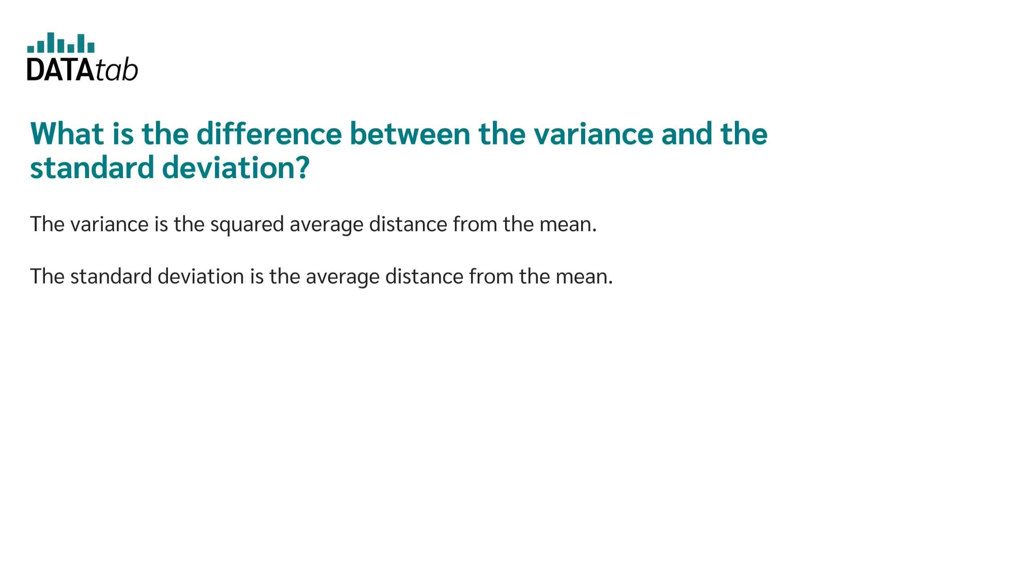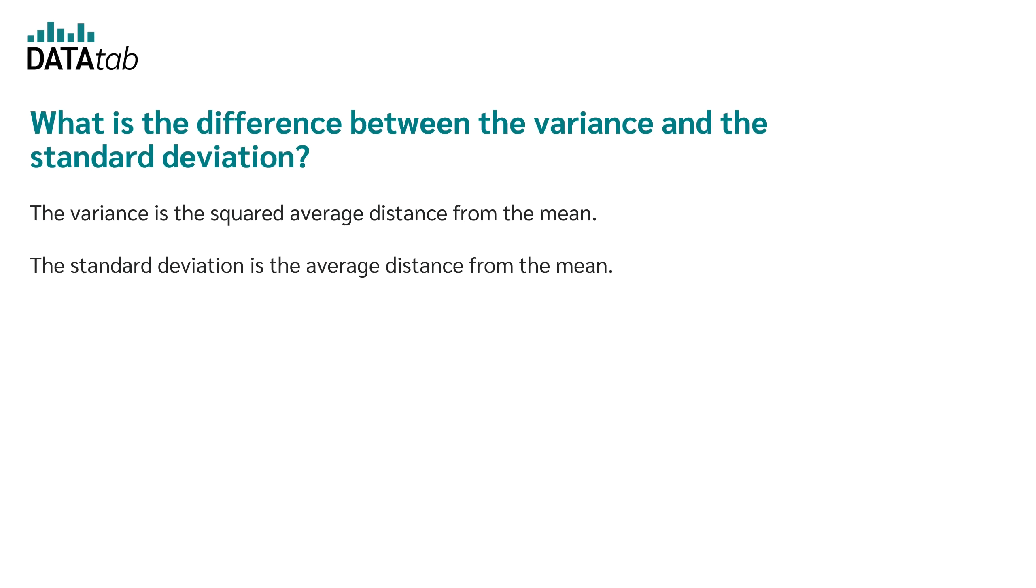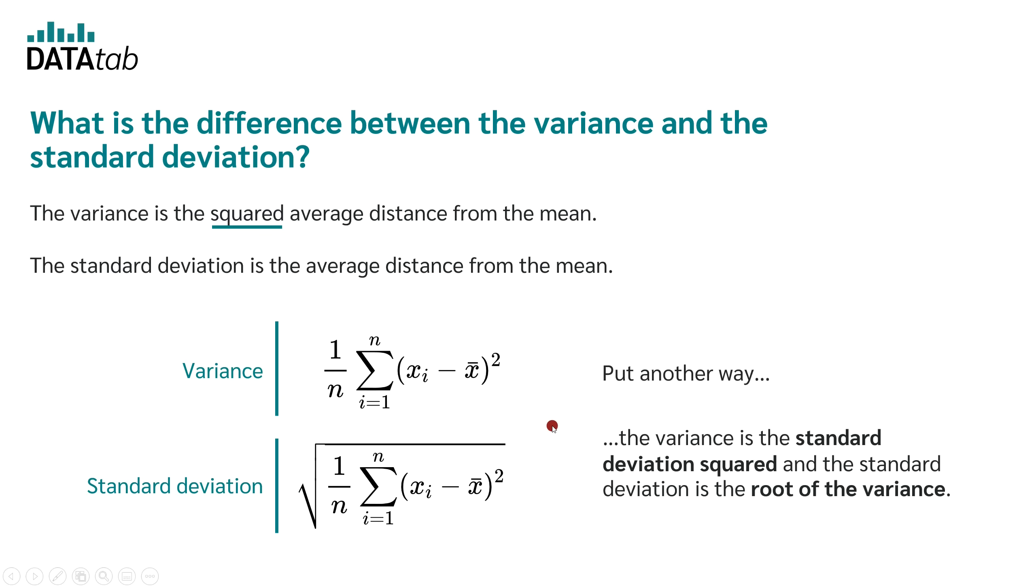What is the difference between the variance and the standard deviation now? As you already know, the variance is the squared average distance from the mean. The standard deviation is the average distance from the mean without the square. So we have one and the same formula. The only difference is that in order to calculate the standard deviation, the root is taken and for the variance it is not. If we put it another way, the variance is the squared standard deviation and the standard deviation is the root of the variance.